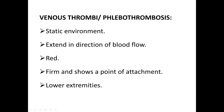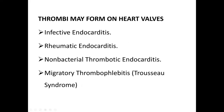Venous thrombi: a static environment is important. They extend in the direction of blood flow, are red in color, and you can hardly find lines of Zahn. They are firm and show a point of attachment, and are more commonly seen in the lower extremities. Thrombi may form on heart valves, as seen in infective endocarditis, rheumatic endocarditis, non-bacterial thrombotic endocarditis, and migratory thrombophlebitis.